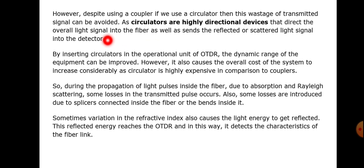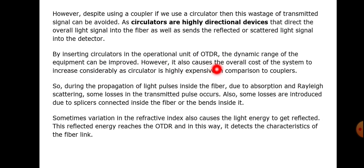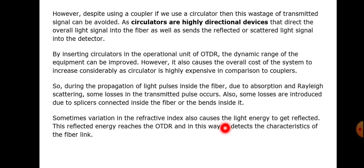We can use couplers to couple light from the laser source to the fiber. Instead of couplers, we can utilize circulators, which are highly directional devices. When inserting circulators in the OTDR, the dynamic range of the equipment can be improved, but the overall cost of the system will increase due to the high cost of circulators. During propagation of light pulses inside the fiber, losses occur due to absorption and Rayleigh scattering, splices, and bends. Variations in the refractive index also cause light energy to be reflected, and this reflected energy reaches the OTDR to detect the characteristics of the fiber link.